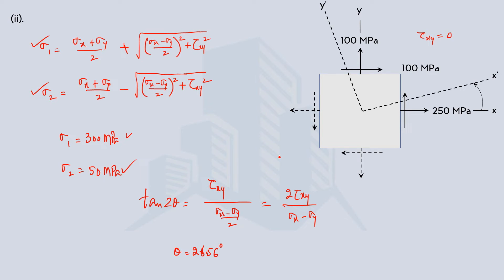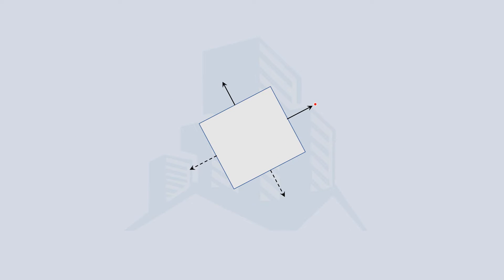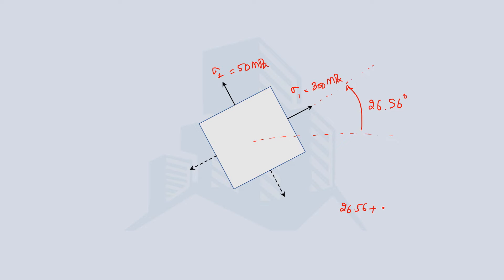We can represent the principal planes on the element: the direction of the principal stress is 26.56 degrees, sigma 1 is 300 MPa, and sigma 2 is 50 MPa. Adding 90 degrees to 26.56 gives 116.56 degrees, which is the angle of the minor principal stress. On these principal planes, the shear stress is zero.